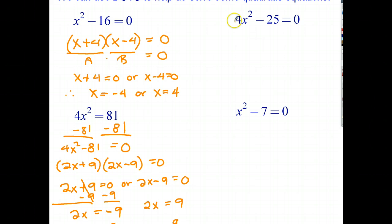So if that whole term is a squared then a is just 2x, b is 5. So I can rewrite the left hand side in factorized form as 2x plus 5 times 2x minus 5 equals 0. So that's a times b equals 0. So the next line is 2x plus 5 equals 0 or 2x minus 5 equals 0.